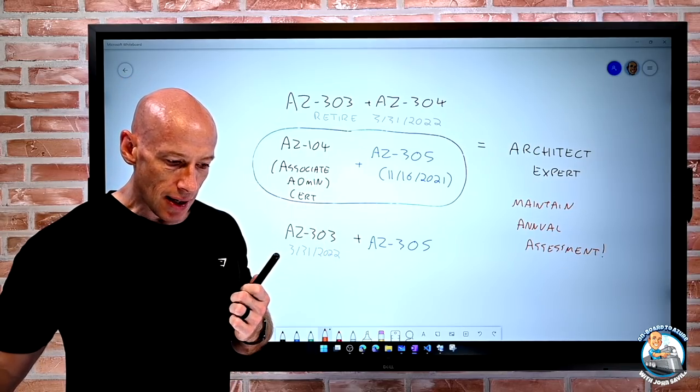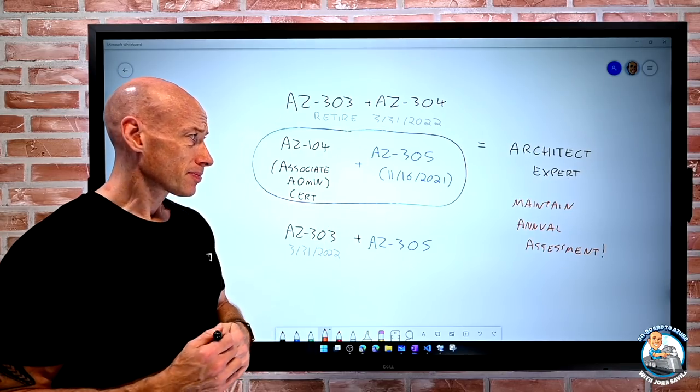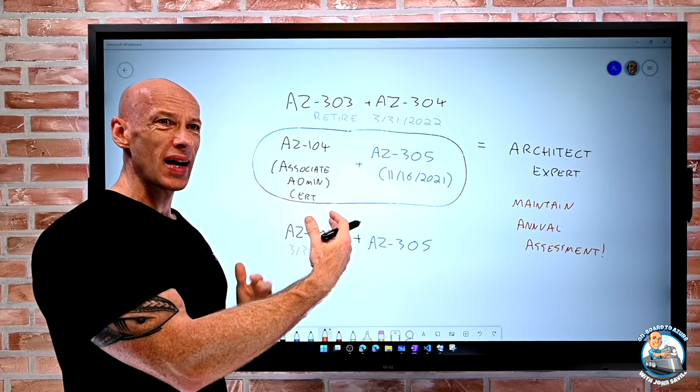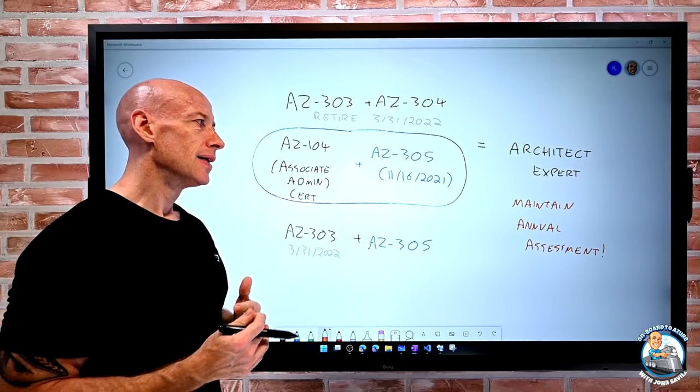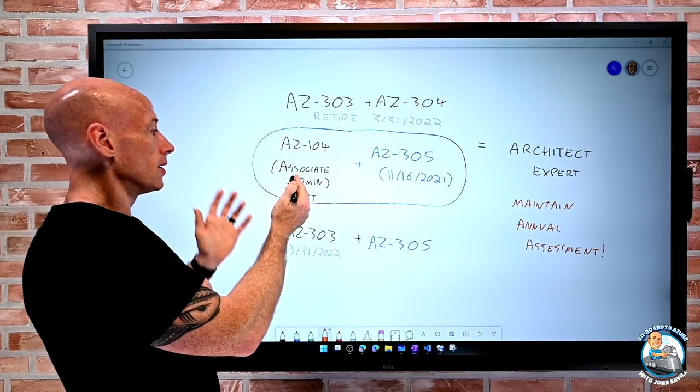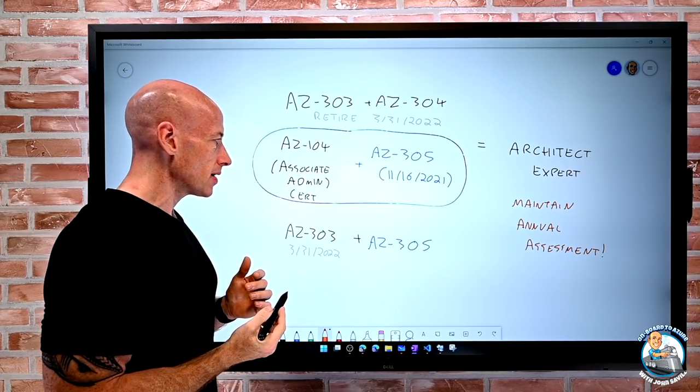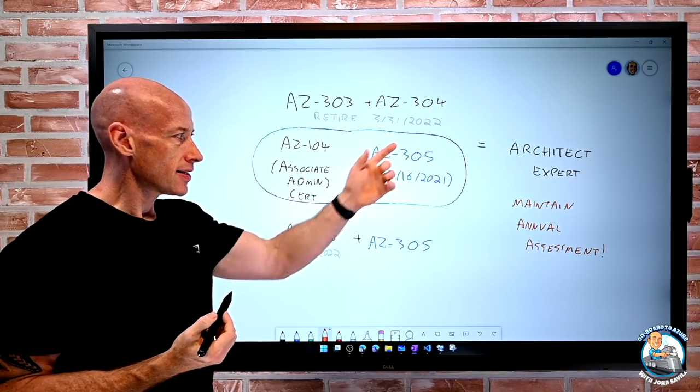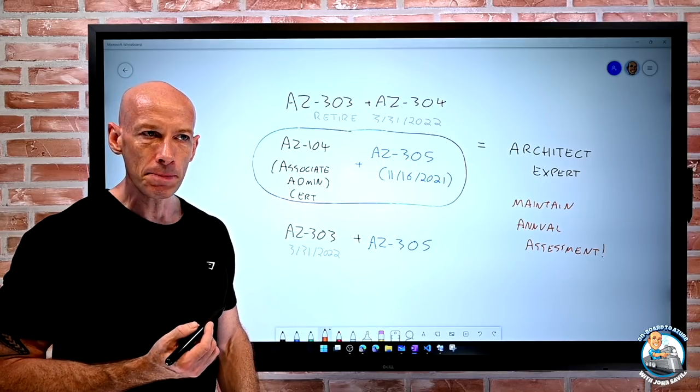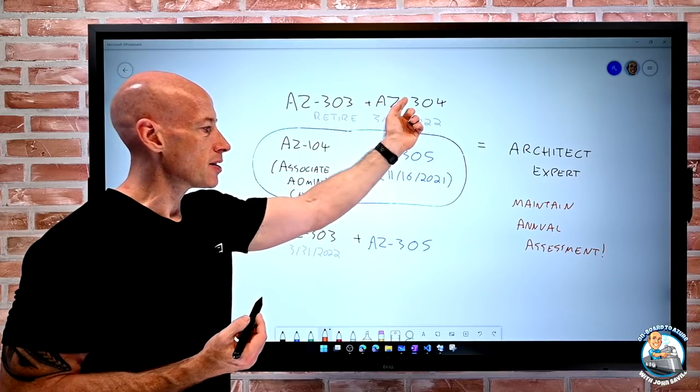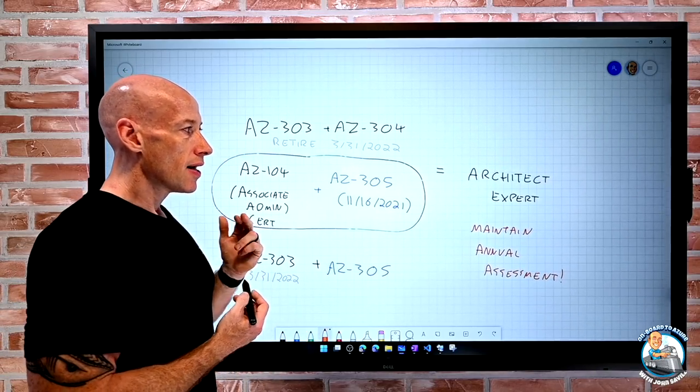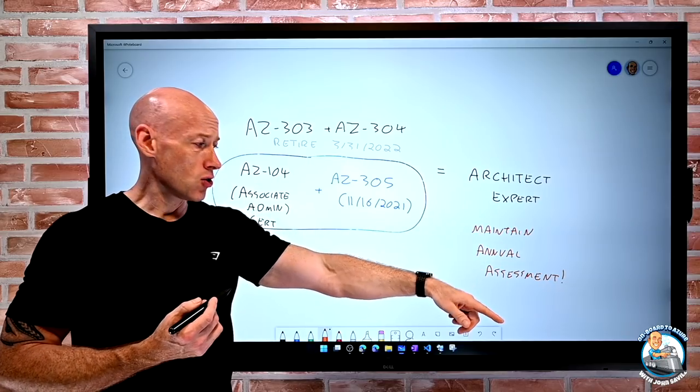So that's really it. I mean that's all this is about. The path is changing more in line with what people are doing, where there is that overlap. Now get my Associate Admin, AZ-104, or that, who knows. But whatever it is to get the Azure Admin certification. And then I take AZ-305. Again, available in beta, 16th of November. But I still have time if I'm on this path or if I want to combine it before the end of March. And then you'll just maintain it using that annual assessment.